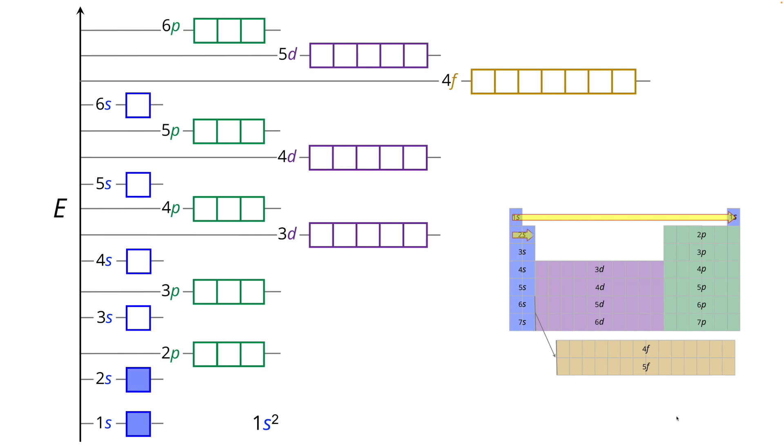Now the next highest energy is the 2s subshell. That also has one orbital, two electrons, so that is 2s2. Next, we have the 2p subshell. That has three orbitals, so three times two is six electrons maximum and that is 2p6.